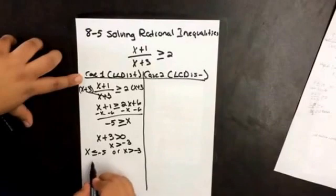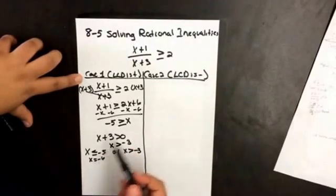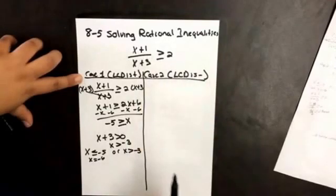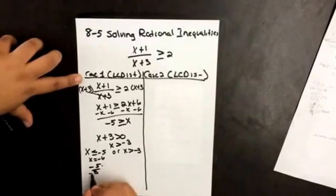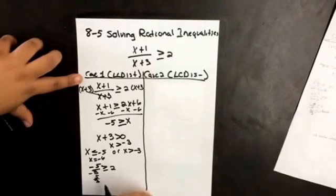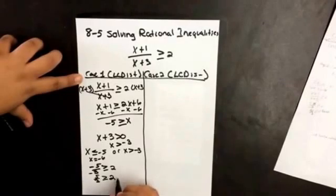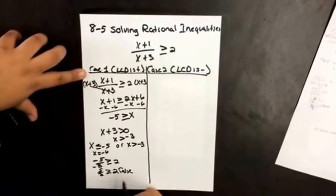Let's test when x equals negative 6. When x equals negative 6, we end up with negative 5 over negative 3, greater than or equal to positive 2. And 5 thirds is greater than or equal to 2 — is that true? No, it's false. So then that's not a solution.